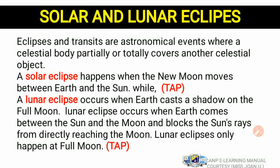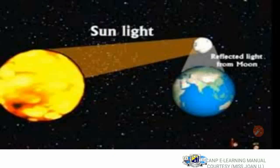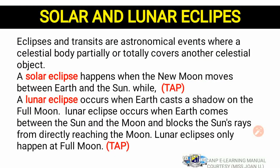When we talk of solar eclipses, we are talking about the Moon coming in between the Earth and the Sun. So when the Moon comes in between the Earth and the Sun, we say a solar eclipse has occurred. When we talk of solar eclipses, we look at three types: the total eclipse, the annular eclipse, and the partial eclipse.